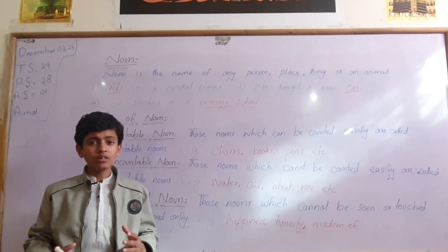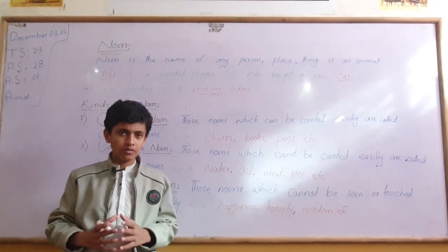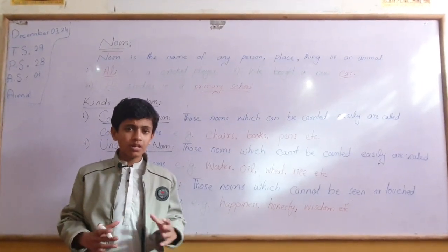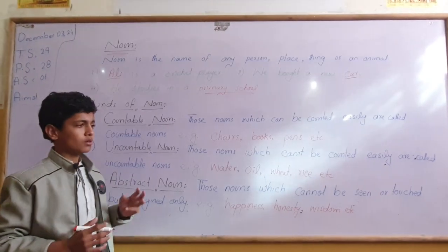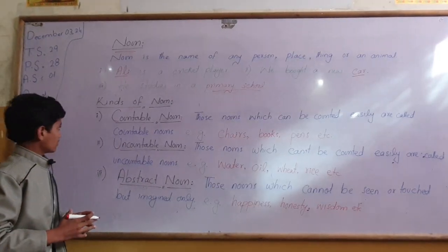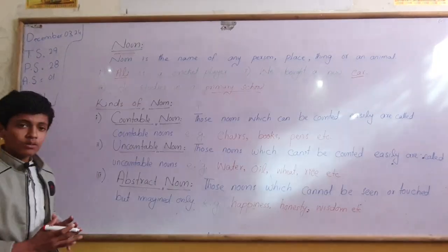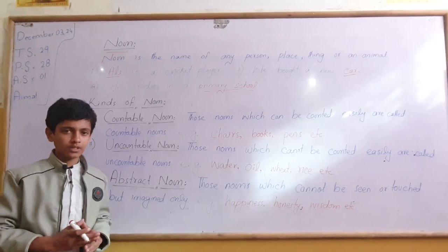I am going to tell you about some kinds of noun. There are many kinds of nouns, but I will tell you about only three: countable noun, uncountable noun, and abstract noun.